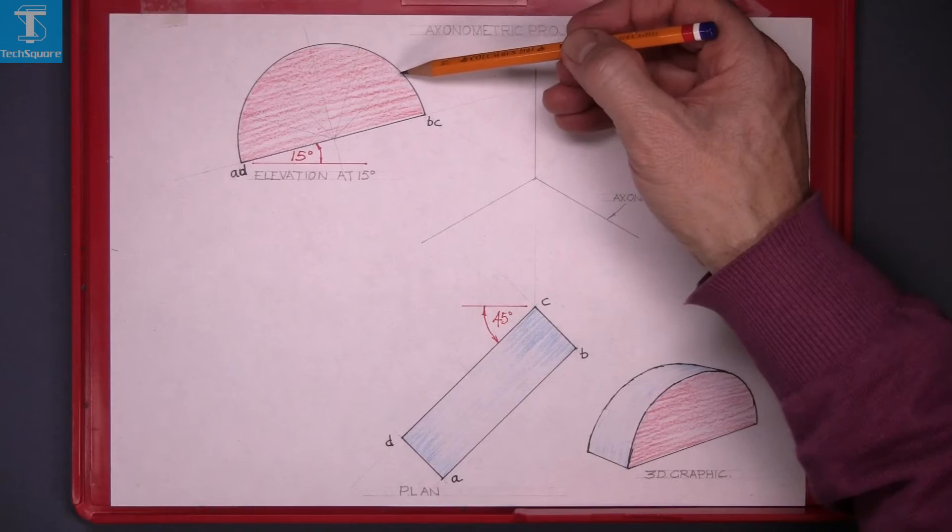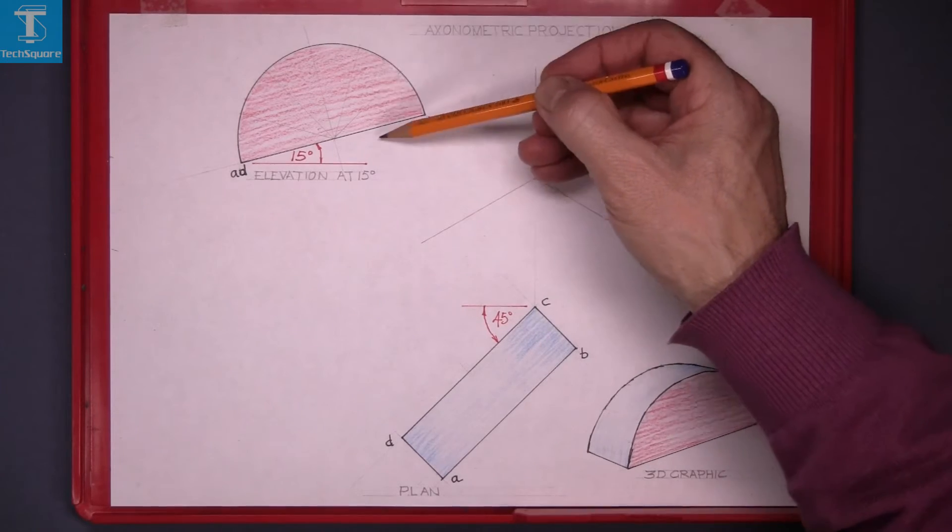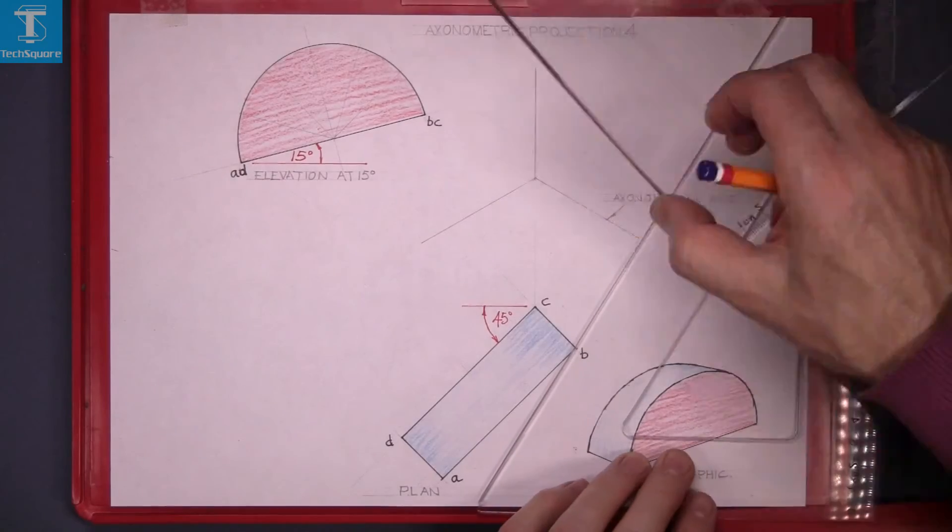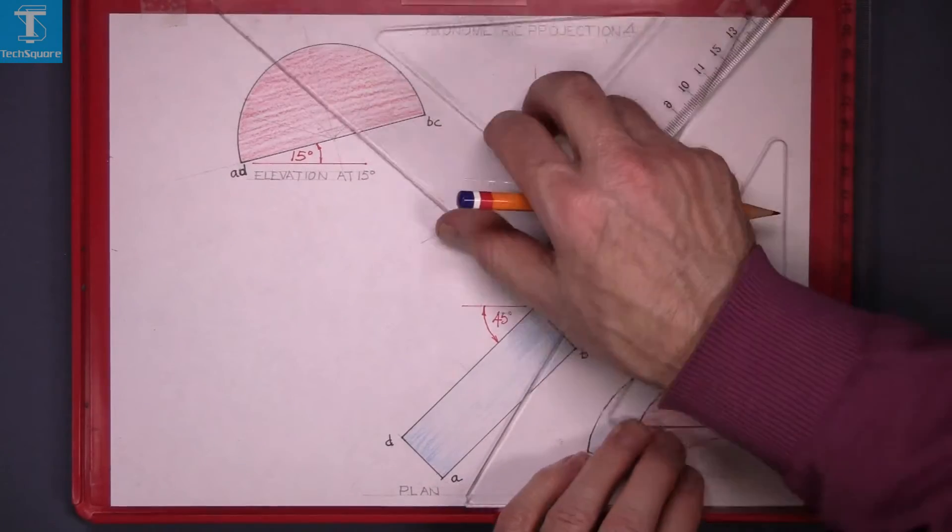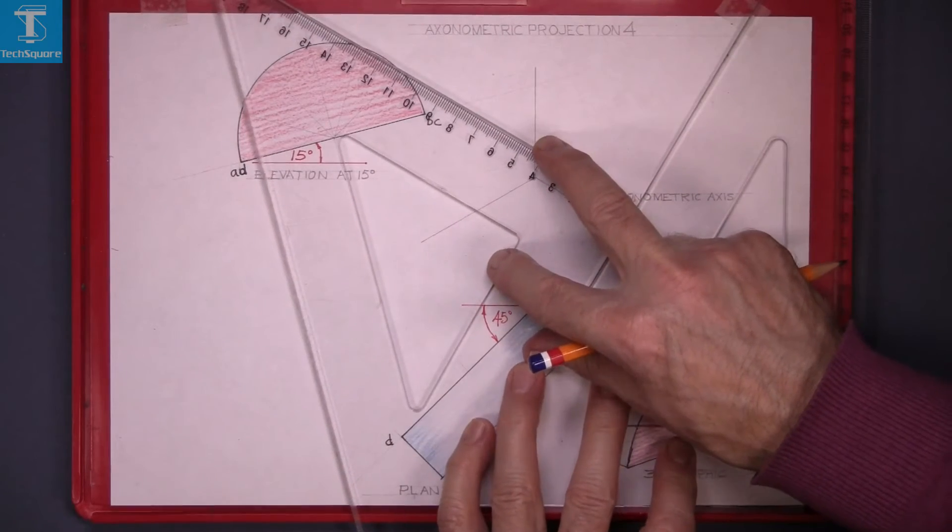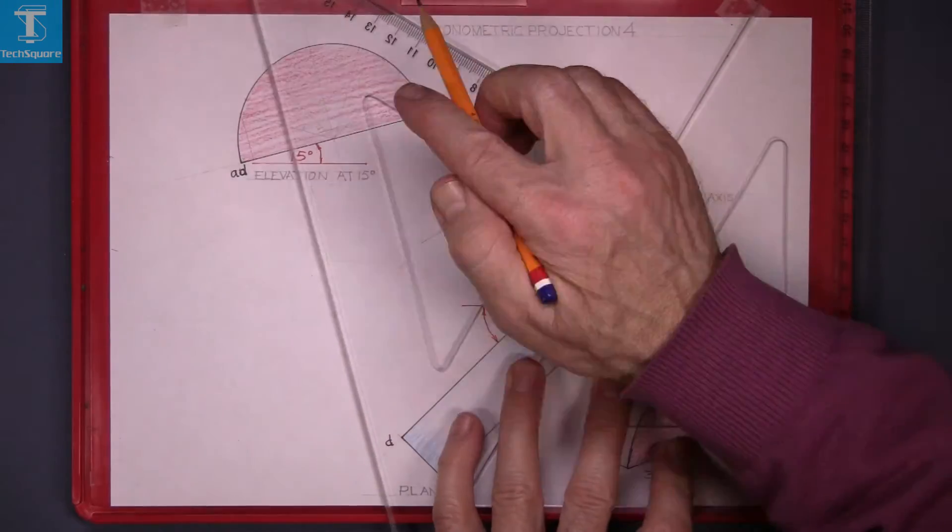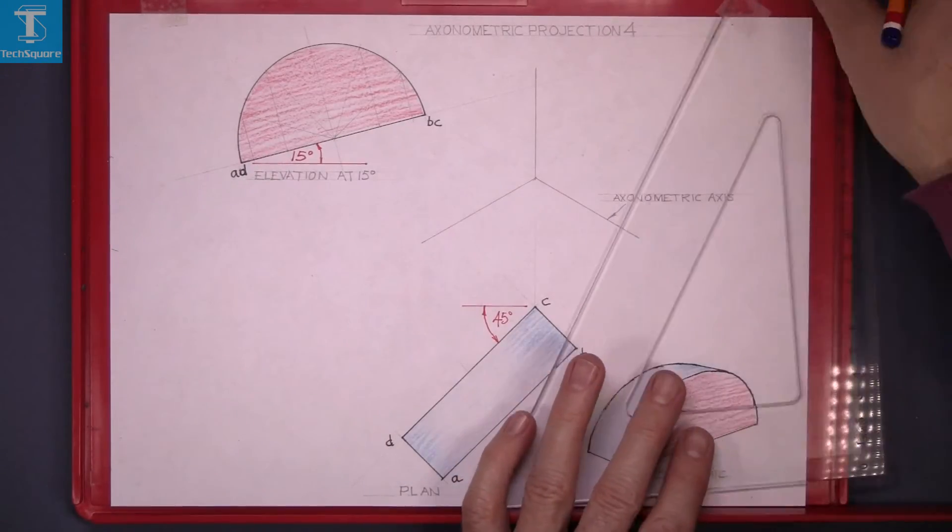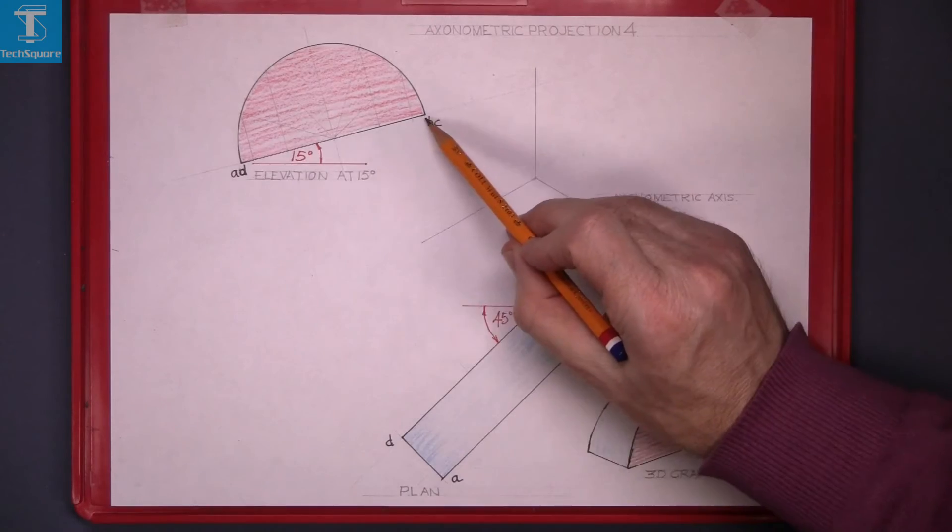The next thing we do is draw those points perpendicular to the diameter. Set up the two set squares again and draw each point down to get them on the bottom line. That's the points now along the bottom line.